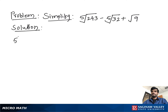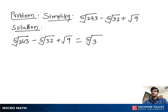Simplify 5th root of 243 minus 5th root of 32 plus square root of 9. We can write this expression as 5th root of 3 to the 5th, which is 243, minus 5th root of 2 to the 5th, which is 32.